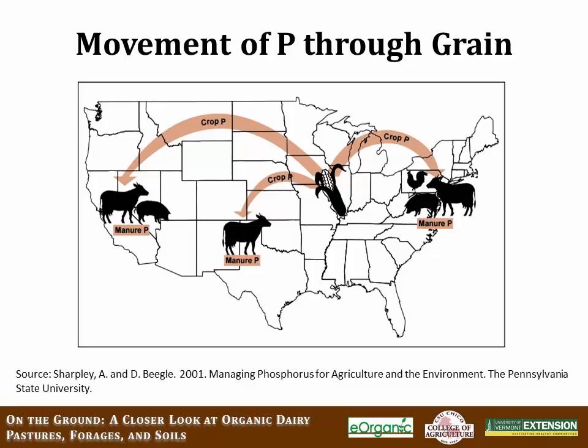In the case of farms that aren't feeding grain, the bigger worry for you is how are you going to continue to maintain the productivity of your forages without fertilizer that comes in as grain. If you're exporting more nutrients than you're importing, then over time your soils could become depleted — so it's the opposite issue.